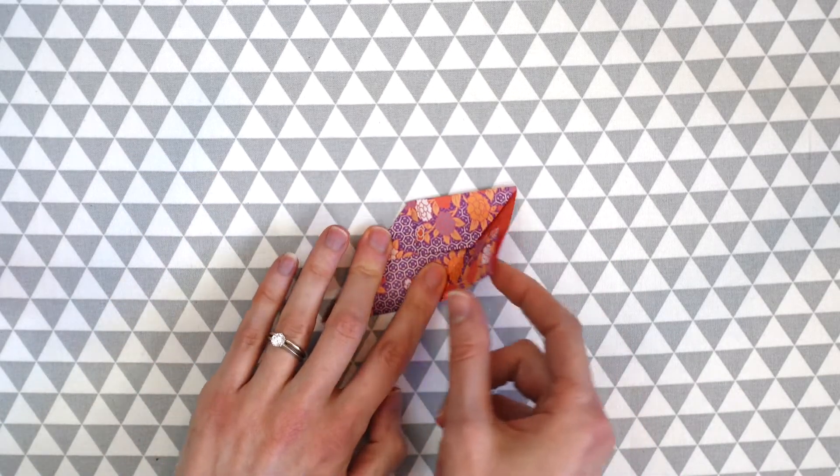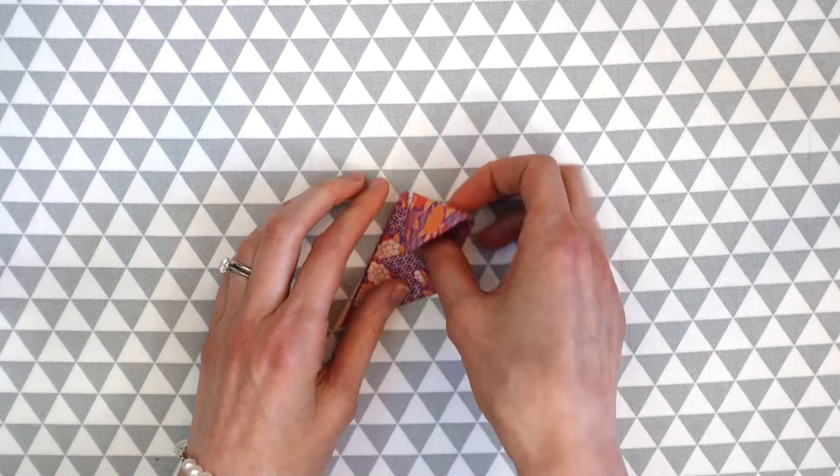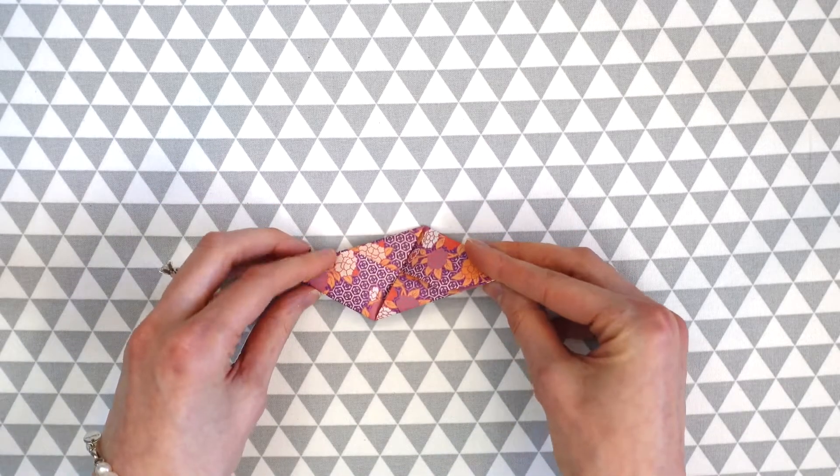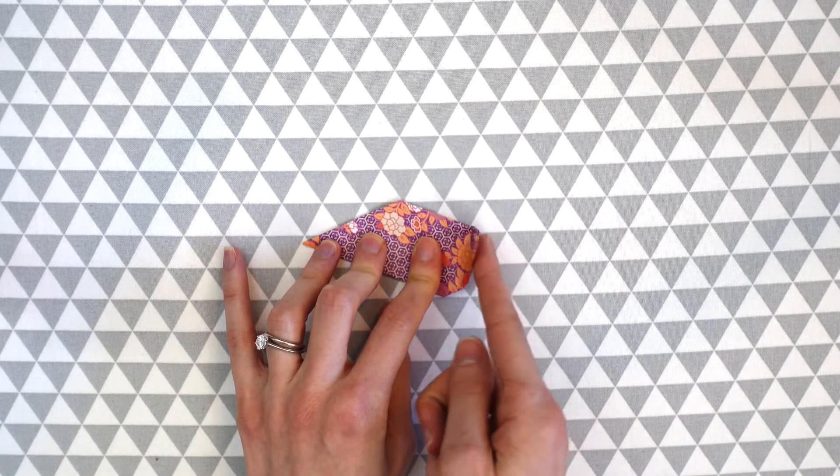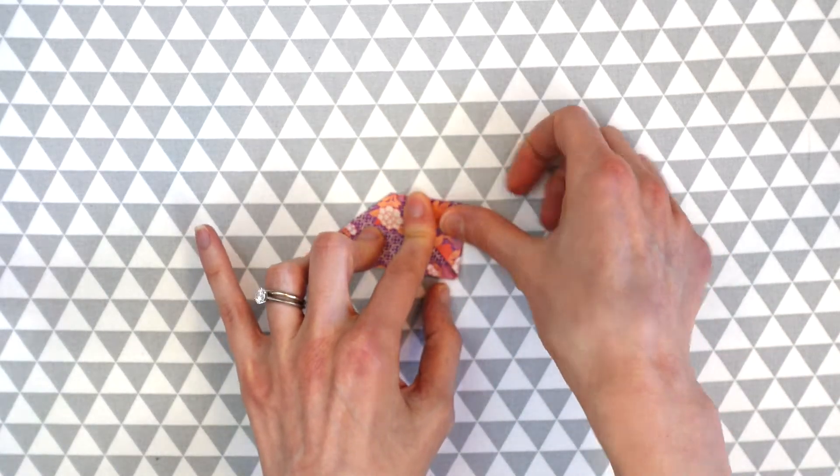So we're going to take this flap on this side and tuck it in right here. Now we're going to flip our shape over and take our right side and bring it across like that.